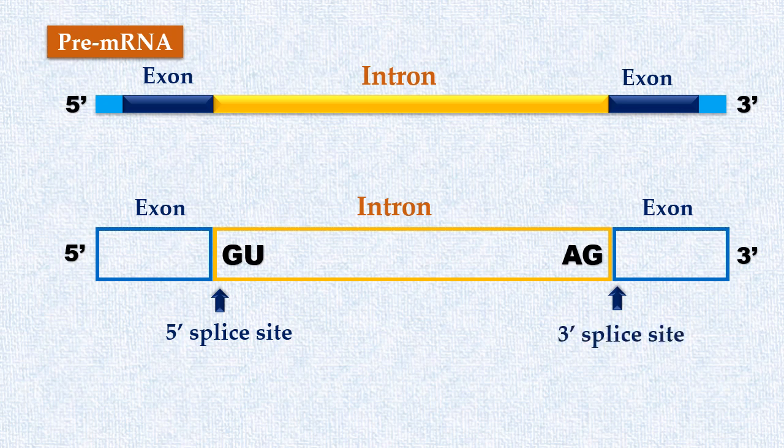Besides these two sites, there is another invariant site in each intron. This site is 15-45 nucleotides upstream of 3' splice site. It contains adenine. This site in intron is known as branch point or branch site.